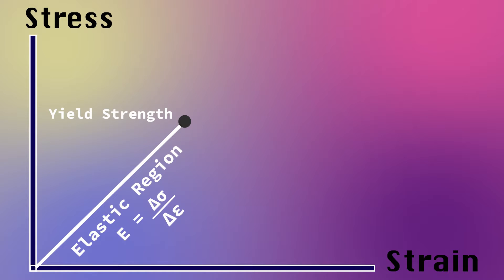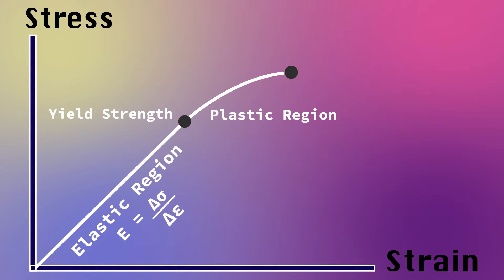The end of the elastic region is the yield strength. Past this level of stress, we encounter the plastic region, where any deformation will be permanent. The ultimate tensile strength is where the material begins to fracture.